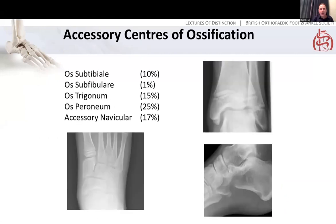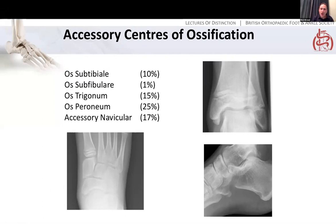Thinking about these small accessory bones — there are very many and they can cause confusion at trauma conferences. Looking at the list, you can see a little extra bone at the bottom of the medial malleolus, which is our os subtibiale — because it's below the tibia. You can also get one below the fibula, which is much less common. Then there's the accessory navicular and the os trigonum, which we'll talk about in more detail. Bear in mind that os peroneum is very common indeed, though it doesn't tend to cause trouble in children — it can cause problems in athletes.